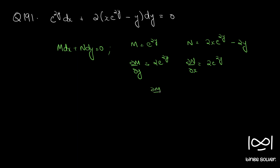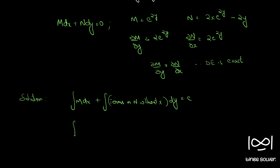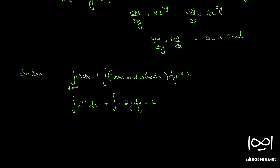So ∂M/∂y equals ∂N/∂x, the differential equation is exact. We can write the solution as: integral of M dx plus integral of terms in N without x dy equals c. Integrating e raised to 2y dx with y as a constant, plus integral of terms in N without x, which is minus 2y dy, equals c.